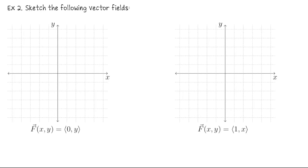Let's look at a few more examples. Suppose f(x,y) is the vector field that takes any point (x,y) and attaches the vector (0,y). Let's see what this looks like by plugging in some points. Starting with the origin: f(0,0) = (0,0), a vector of no magnitude. In fact, everywhere along the x-axis the y-coordinates are 0, so to every point on the x-axis we associate the vector (0,0).